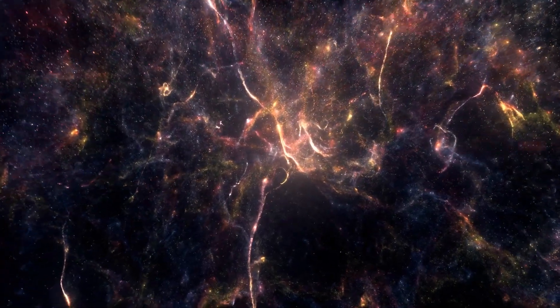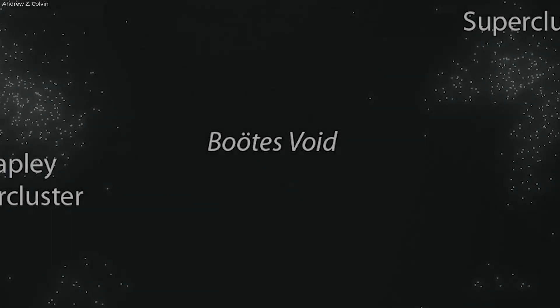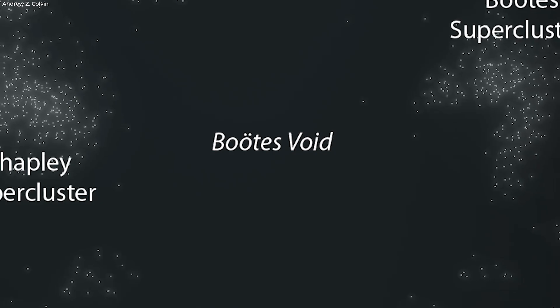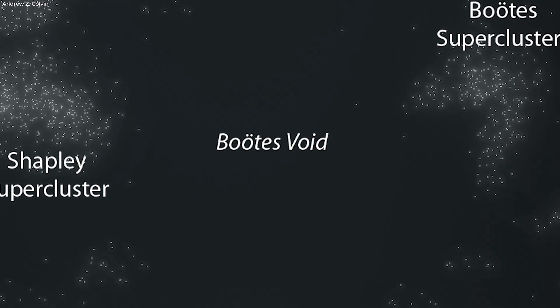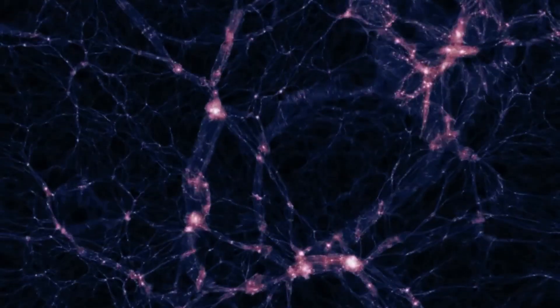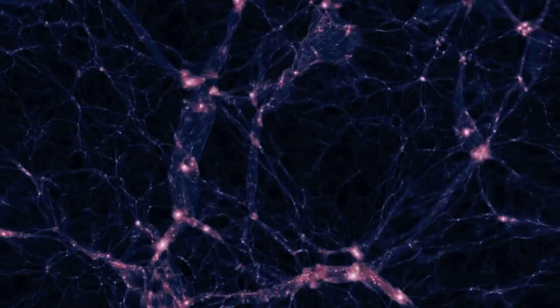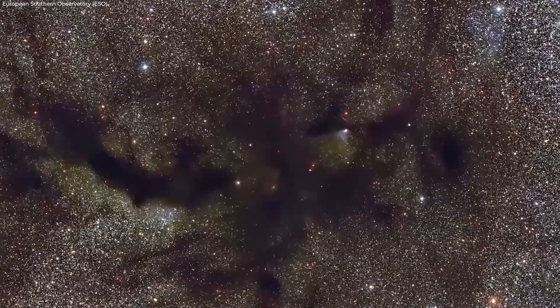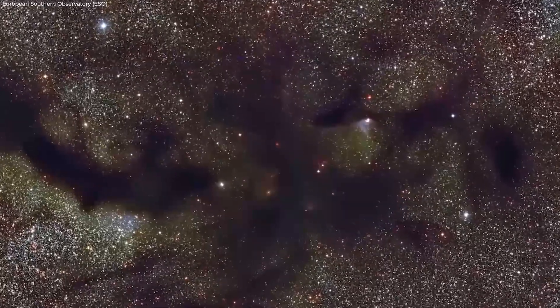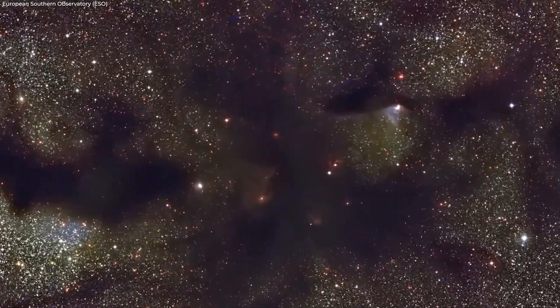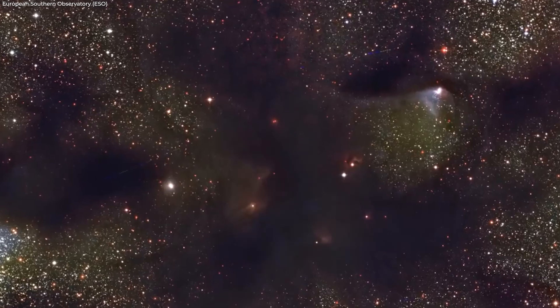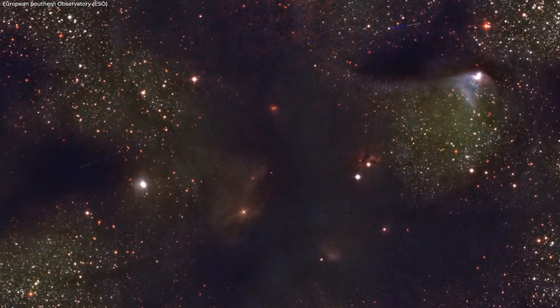As the universe keeps expanding, cosmic voids such as the Boötes will keep growing even more. The filaments connecting clusters of galaxies will stretch and break. The voids will merge, and only gravitationally bound galactic clusters will remain as islands, adrift in the expanding emptiness.